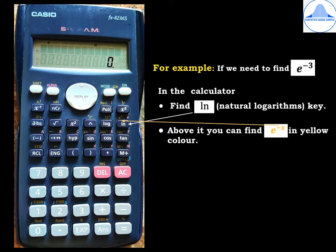In the calculator, first find the ln key. ln stands for natural logarithms. Above it, you can find e to the power minus x, which is marked in yellow color.